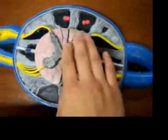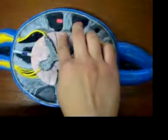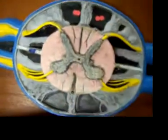This right here is the dorsal column, and in the middle of the dorsal column is the posterior median sulcus.